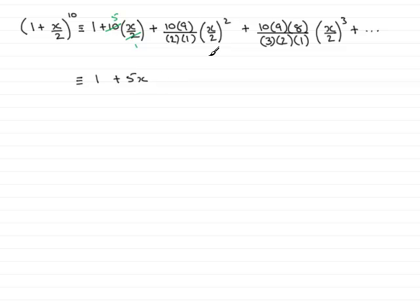Now when it comes to the third term you should be able to cancel out a few things. The 2 for instance here goes into the 10 five times and so you've got 5 nines of 45. So you've got 45x^2. Don't forget this 2 is squared so that's over 4.